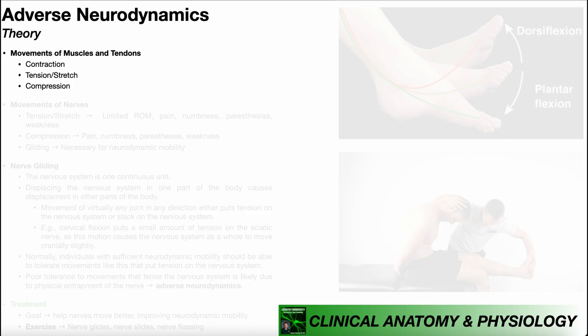Welcome to the playlist on neurodynamics and nerve tension. In this video we're going to be introducing the concept known as adverse neurodynamics. Understanding this will be our foundation for understanding limb tension tests and also the treatment for nerve tension, which is called a nerve glide. There are nerve glides for all the specific nerves and we'll be looking at those throughout this playlist.